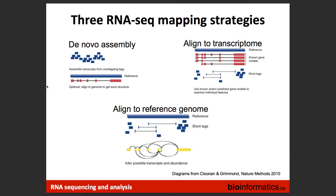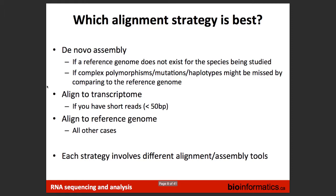Aligners are split into three classes: de novo assembly aligners, aligners that align to transcriptomes, and aligners that align to the reference genome. For projects where no reference is available, de novo assembly is a good choice. It's also useful when samples have so many polymorphisms or mutations that they might be missed against a fixed reference genome. If you have a reference, you can choose to align to the transcriptome or the reference genome — aligning to the reference genome is more popular, with many tools available.